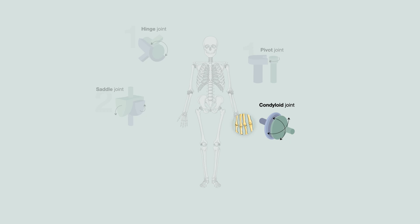A condyloid joint is also known as an ellipsoid joint. Articulation occurs between a shallow depression and a round end. This is a biaxial joint which allows for flexion and extension and abduction and adduction movements. This joint can be found at the metacarpophalangeal joint, also known as the knuckles.